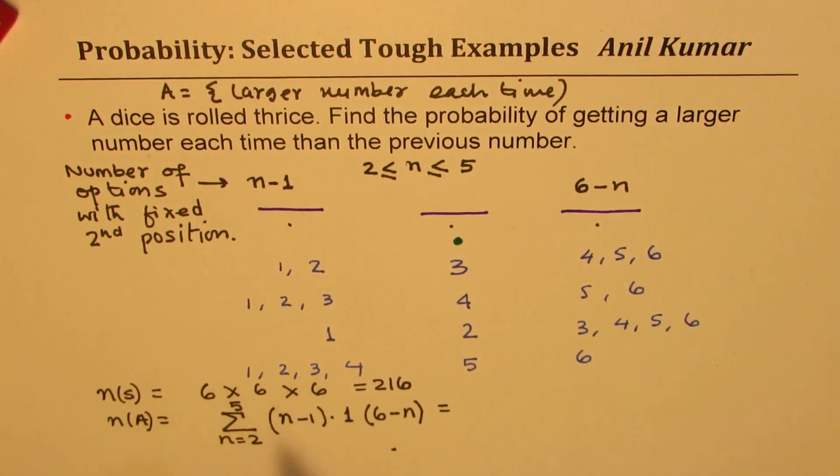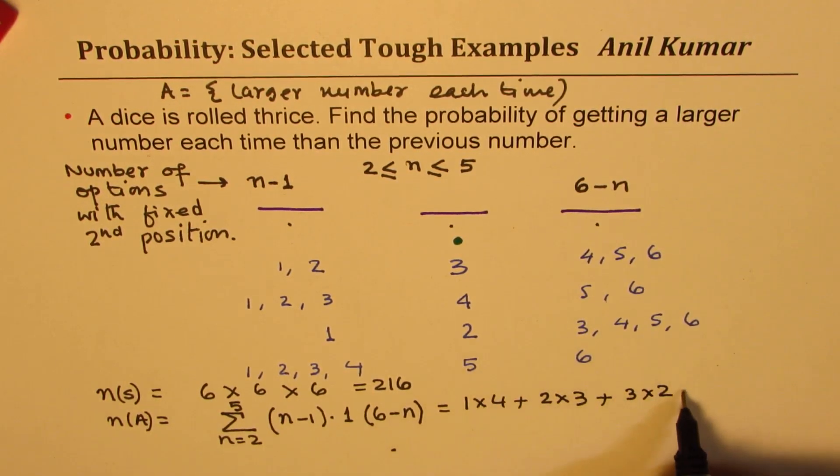You get the idea, right? So if N is two, we can just place the value two and then find this answer. If N is two, then we get what? We get one times four, right? So we get this as one times four for N equals to two. If N is three, we get three minus one is two. And here we get three options. If N is three, we get two times three, right? So we get two times three. And if N is four, then we get three times two, which you can see, right? Three times two. And when N is five, we get four times one. So these are the total outcomes, which are favorable outcomes. So you can actually add them up. So we get four plus six is 10 and this is also four plus six is 10. So these are 20 options.